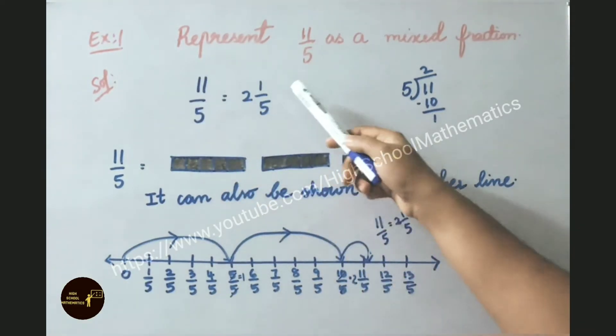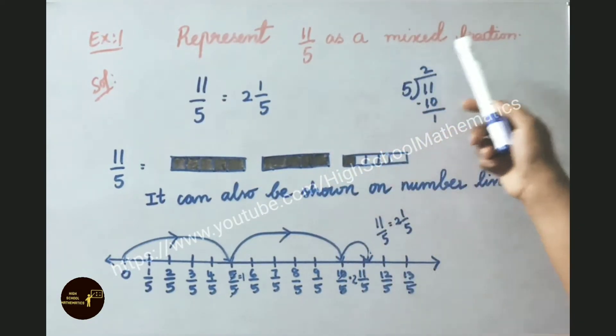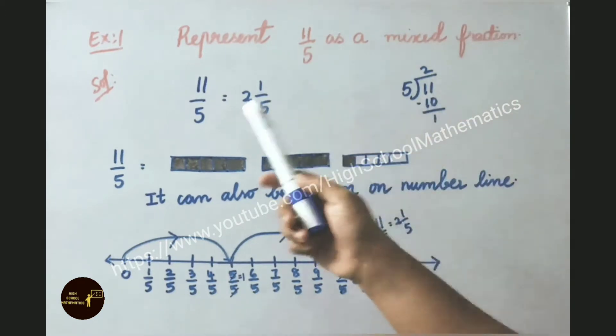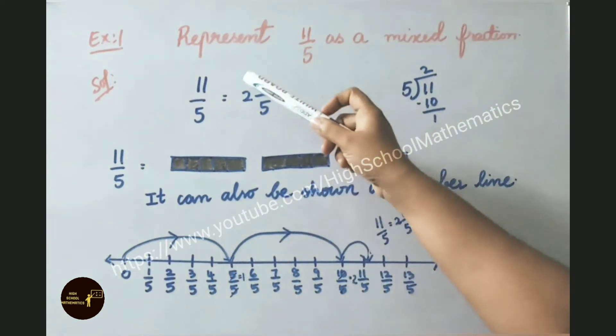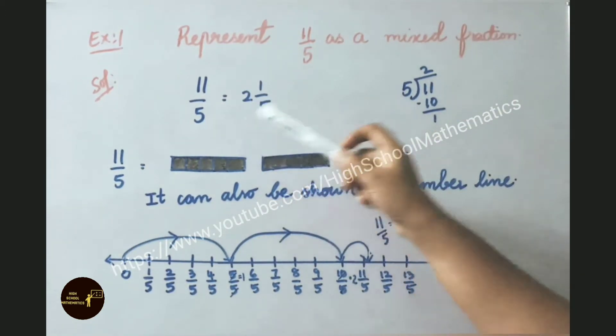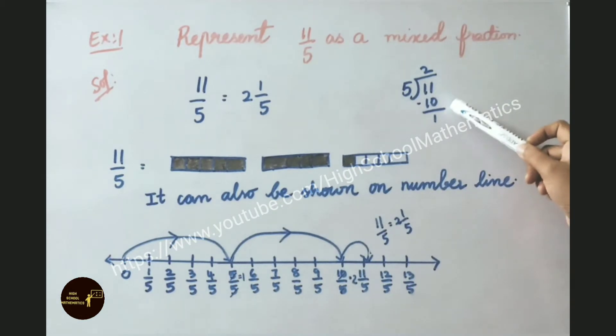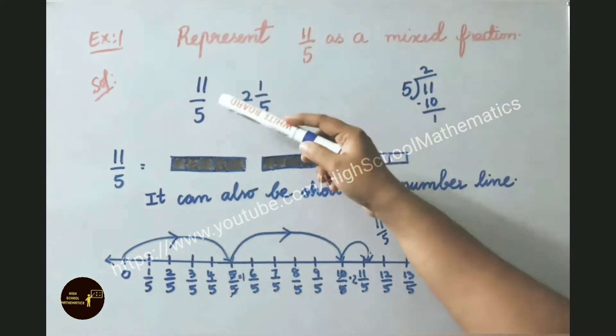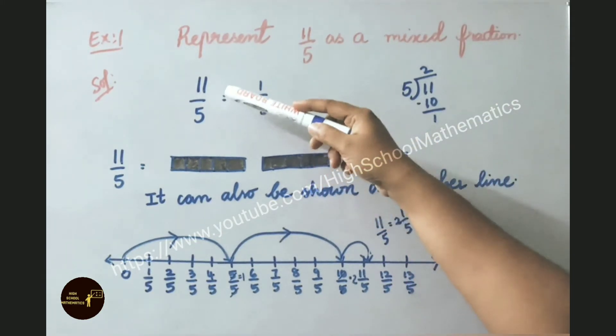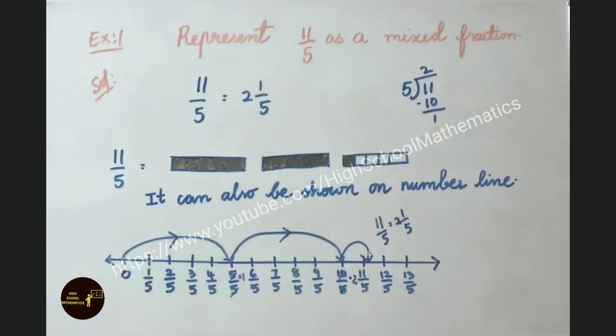See now example 1: represent 11 by 5 as a mixed fraction. Let us see the solution. 11 needs to be divided by using 5. 5 table: 5 twos are 10. We got a remainder after subtracting 10 from 11. We got 1. So the answer is 2 and 1 by 5. So here what we have done is we converted improper fraction to mixed fraction.